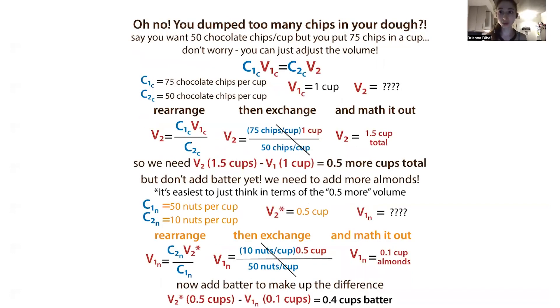But oh no, you dumped too many chips in your dough. Say you wanted to make your chocolate chip cookies to have 50 chocolate chips per cup, but you accidentally put in 75 chips. Don't worry, you can then just adjust the final volume and make more. This is often something that might happen in the lab if you accidentally add too much of one of the components. All hope might not be lost. You can just make a little more without any problem.